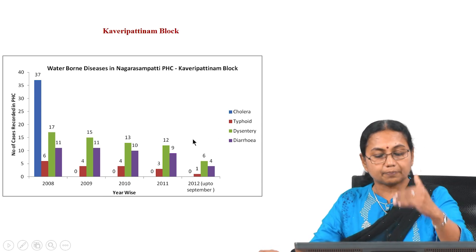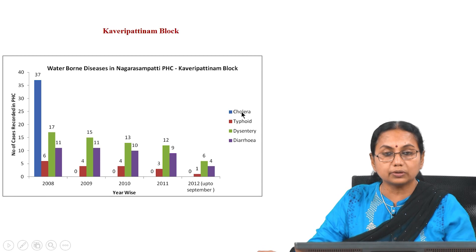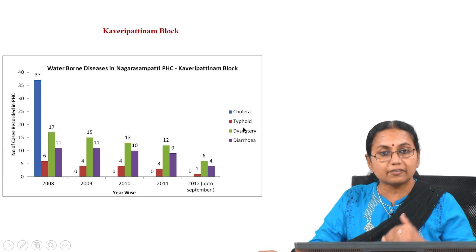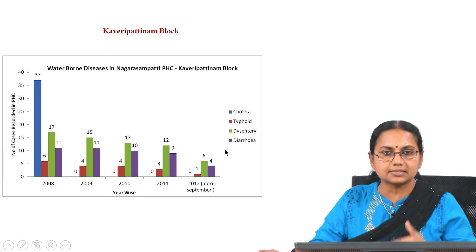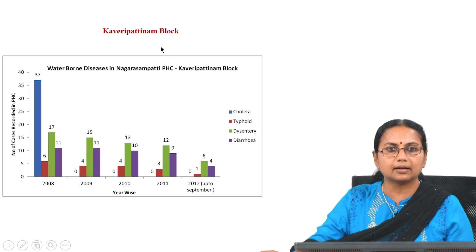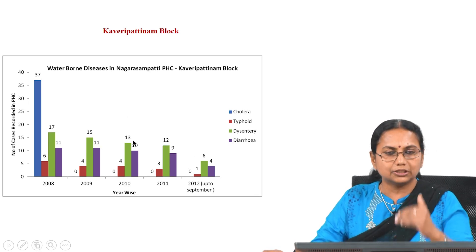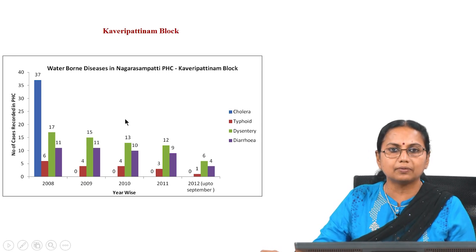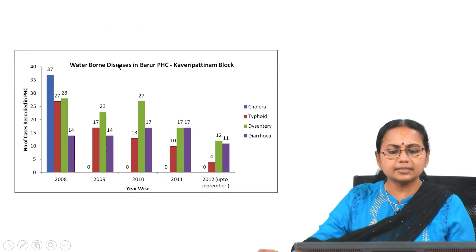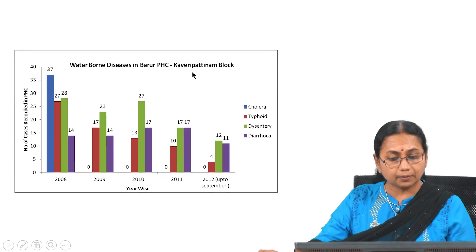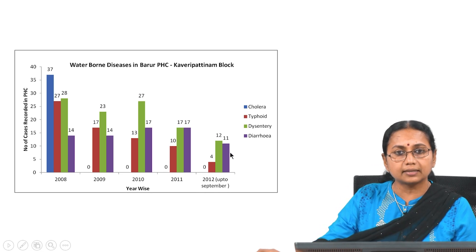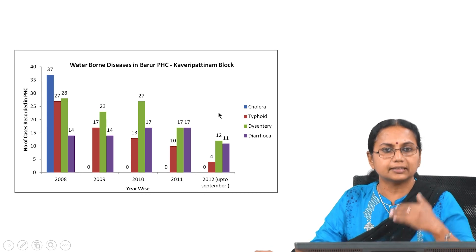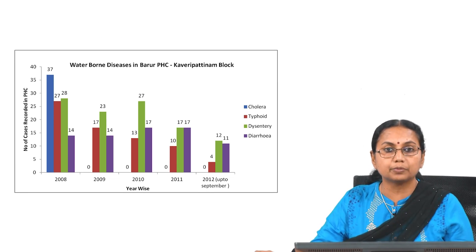Waterborne diseases examined included cholera, typhoid, dysentery, and diarrhea — all diseases occurring due to consumption of contaminated water. A second block showed the same trend, with the number of waterborne diseases decreasing significantly after training. This demonstrates that when awareness increases, water quality and health outcomes improve significantly.